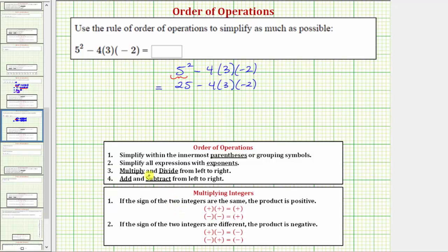Step 3, we multiply and divide from left to right, and notice here we have 4 times 3 times negative 2, so we simplify this product next.